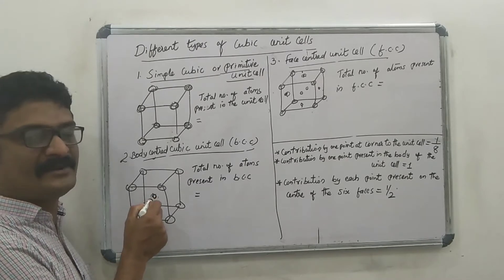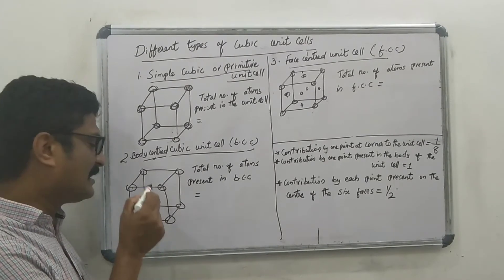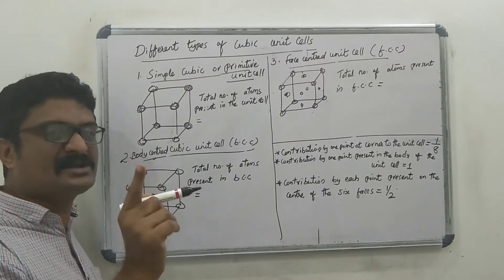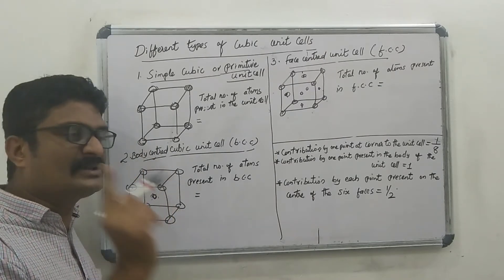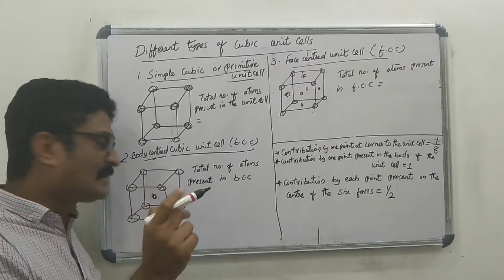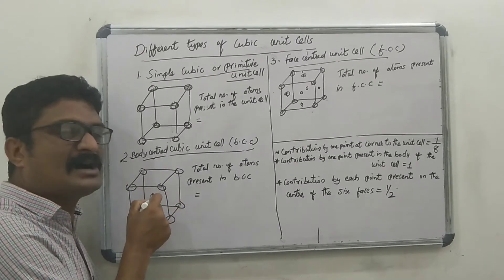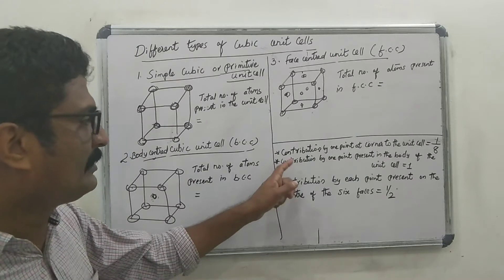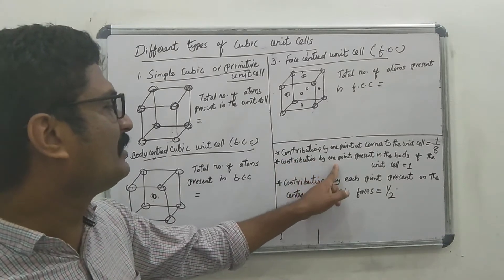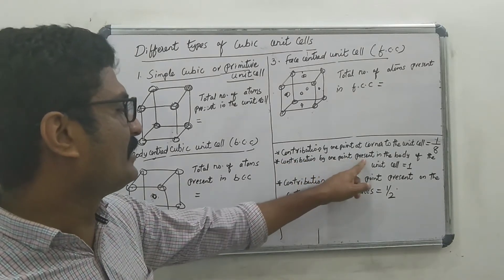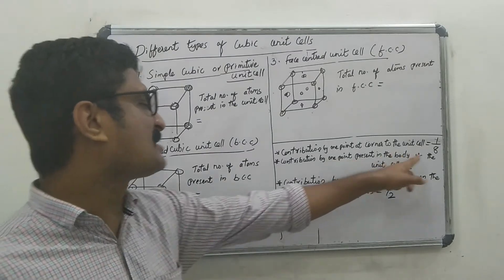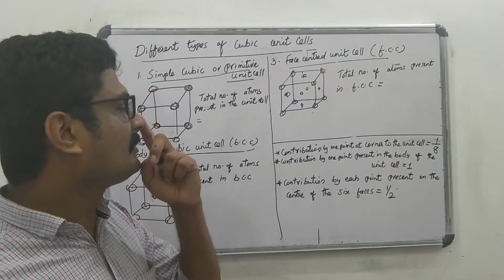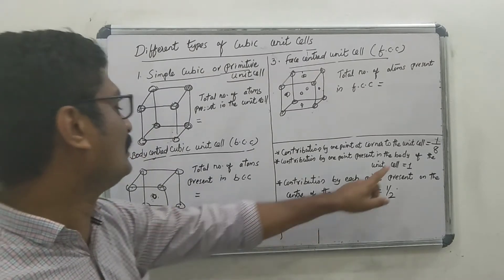The body center atom is present at the center of the unit cell. This atom is shared only by that unit cell, so its contribution is equal to 1.